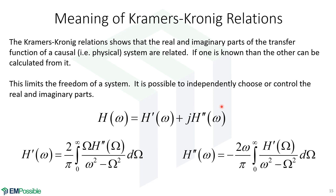We had a transfer function that is in general complex, but it is the Fourier transform of a purely real and causal impulse response. Because of that, the real and imaginary parts are related, and that's what the Kramers-Kronig relations are really telling us. For example, maybe it's easy to measure the real part but not feasible to measure the imaginary part — this gives us a way to calculate one from the other. It also tells us we don't have as much freedom as we think: the real and imaginary parts are not independent, and knowing one allows you to calculate the other.